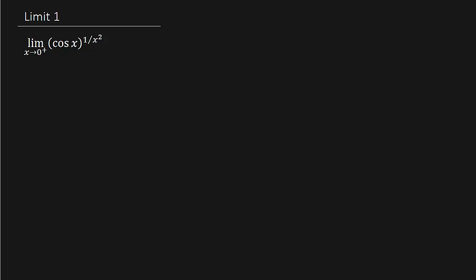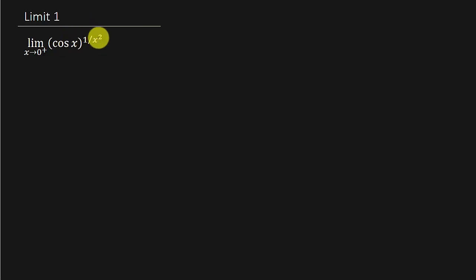You can see if we plug 0 into here, cosine of 0 is 1. And then as we approach 0 from the right, this exponent goes to infinity. So we get 1 raised to the infinity power. This is an indeterminate form, so let's see how we go about solving this problem.